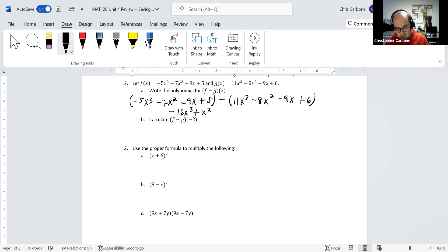Negative 9x minus negative 9x, those cancel out. And then 5 minus 6, which is negative 1.